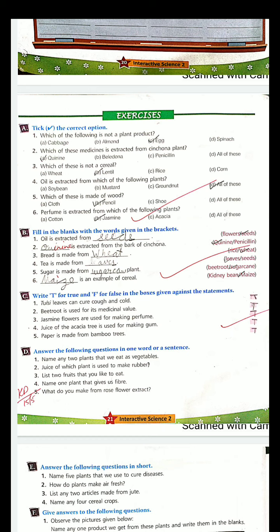Jasmine flowers are used for making perfumes. Yes, it is true. Juices of the akakya tree is used for making gum. It is true. Then paper is made from bamboo tree. It is also true.